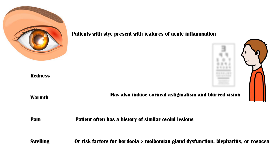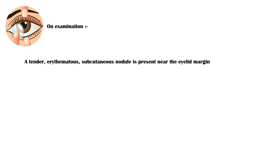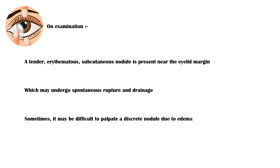On examination, a tender erythematous subcutaneous nodule is present near the eyelid margin, which may undergo spontaneous rupture and drainage. Sometimes it may be difficult to palpate a discrete nodule due to edema. They can be unilateral or bilateral, single, or multiple.